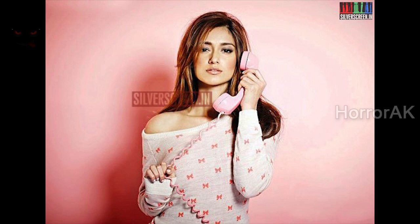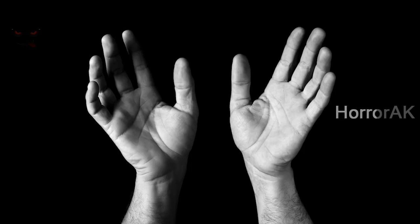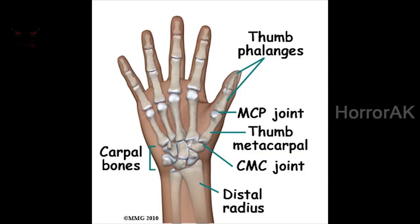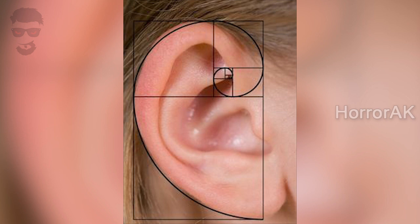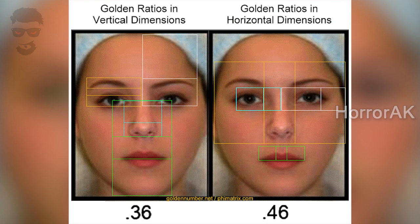We have 5 senses. We have 5 fingers. We have 3 bones and 2 bones. We have a golden ratio. We have a golden spiral. We have a golden ratio in our bodies.